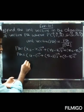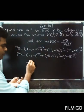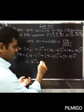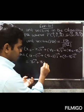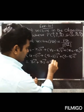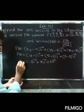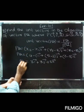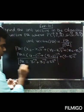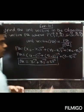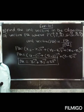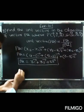So 4 minus 1 is 3, plus 5 minus 2 is 3 j-vector, plus 6 minus 3 is 3 k-vector. So PQ equals 3i + 3j + 3k. Next we need to find the modulus of PQ vector.